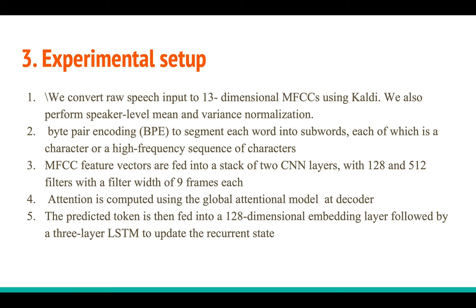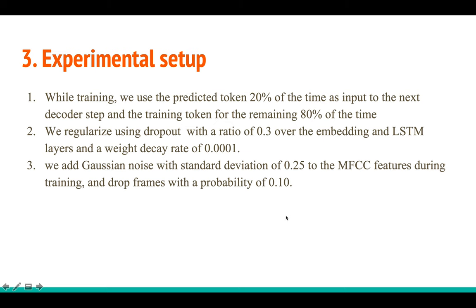For features, they use 13-dimensional MFCC extracted via Kaldi, with speaker-level mean and variance normalization. For vocabulary, they use byte pair encoding to split sentences into subwords, which are used as output tokens. The MFCC features go as input to a two-layer CNN with 128 and 512 filters, followed by LSTM. Attention is used at the decoder, and the predicted token's embedding feeds as input to the next decoding step.